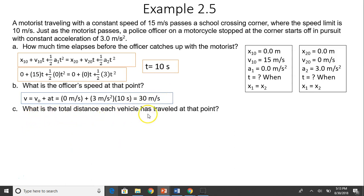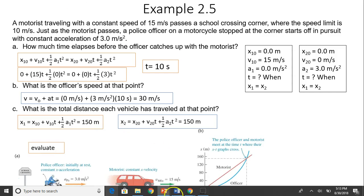What is the total distance each vehicle has traveled at that point? For the motorist, you can use this equation to substitute the time, 10 seconds, and you should have 150 meters. For police officer, again, you substitute time 10 seconds, and you should also get 150 meters. Does that make sense? Should the two have the same position? Of course they should, because when the police officer catches up with the motorist, they travel the same distance. So here is a graph, what the graph looks like.